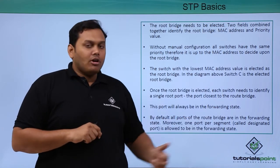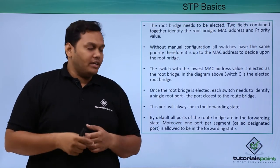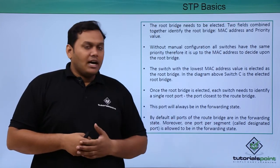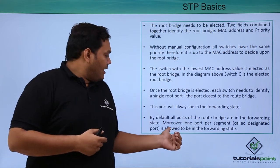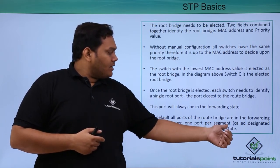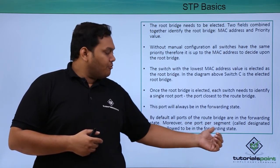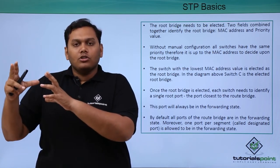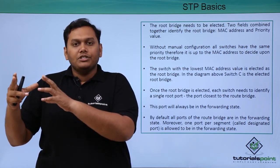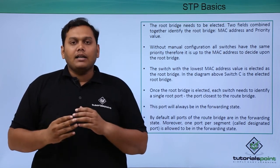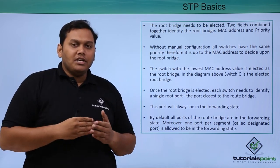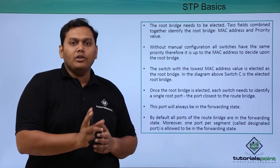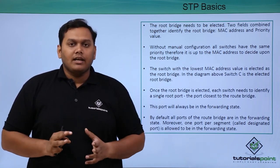The root port will always be in a forwarding state. By default, all ports on the root bridge are in forwarding state, and one port per segment — the designated port — is allowed to be in the forwarding state. The adjacent switches connecting to the root bridge will be in forwarding state and the rest will be in a blocked state.